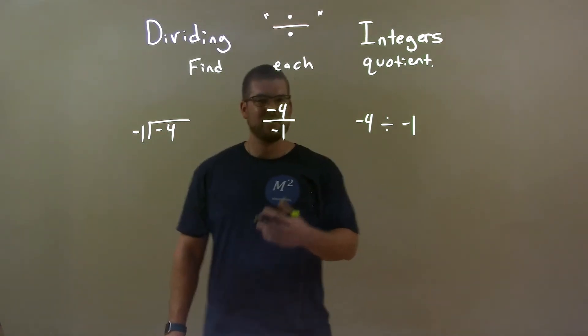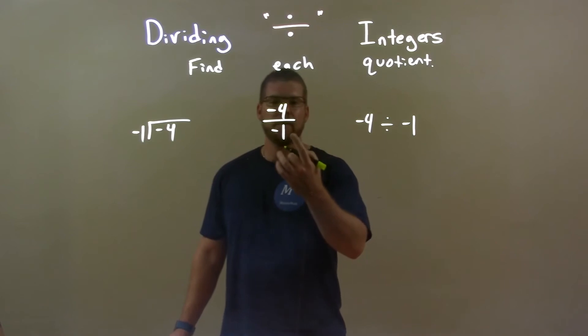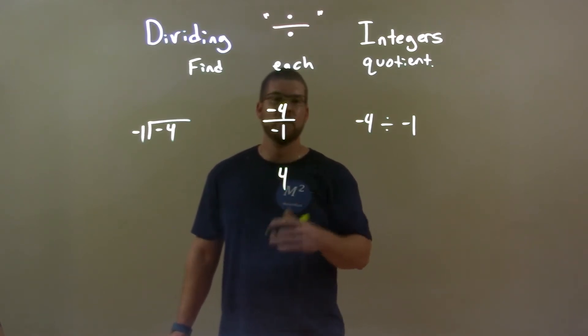Well, this one's actually pretty simple. Ignore the negatives for right now. How many times does 1 go into 4? Well, 4, right? Any number divided by 1 is itself. So 4 divided by 1 is just 4.